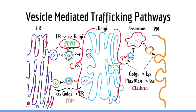The cis Golgi contains mostly immature proteins that have not yet been modified — these are typically proteins that were just made in the endoplasmic reticulum. The trans Golgi, on the other hand, has mature proteins that are ready to be sent out of the Golgi to their respective destinations.